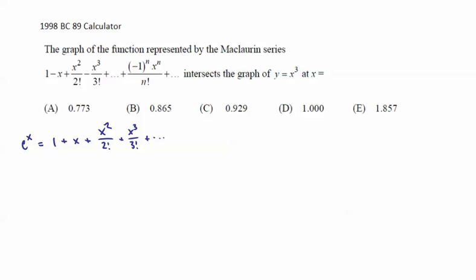So this one, the alternating version of that is going to be e to the negative x, which is 1 minus x plus x squared over 2 factorial minus x to the third over 3 factorial, etc. So you have to be able to spot that.